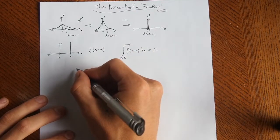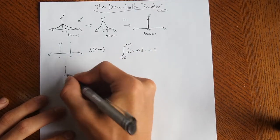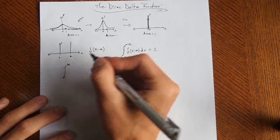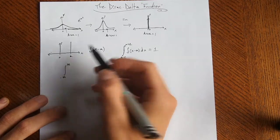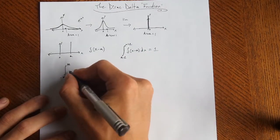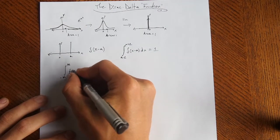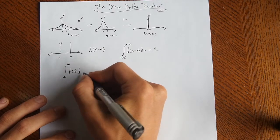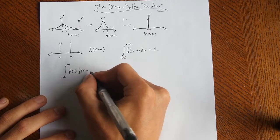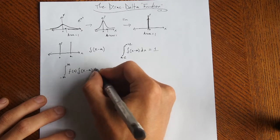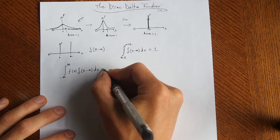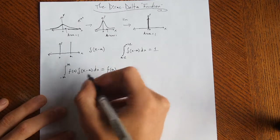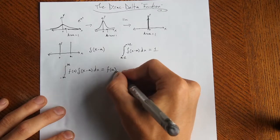So for example, if we integrate from negative infinity to infinity - but as long as the limits include wherever the delta is, you're good - we integrate some function f of x, it doesn't matter what it is, times the delta at some point, that is just going to equal f at that point. Now, why is that the case?